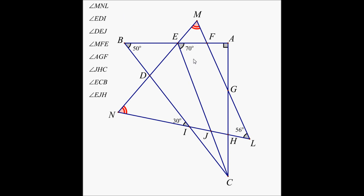So let's see how we can find the measure of angle MNL. Well, this is a triangle and these two angles are congruent and this angle is 56. So from 180 — because three angles of a triangle add up to 180 — if you subtract 56, you get 124, and 124 divided by 2 is 62. So this angle and this angle each have to equal 62.